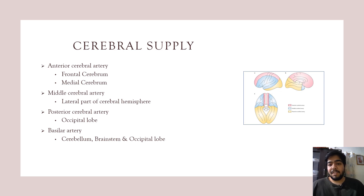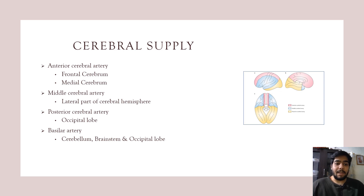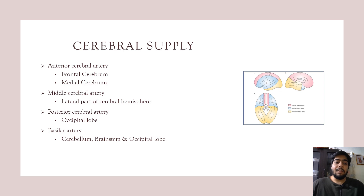This diagram shows which areas of the brain are supplied by which artery. The anterior cerebral artery supplies the frontal and medial cerebrum. The middle cerebral artery supplies the lateral part of the cerebral hemisphere. The posterior cerebral artery supplies the occipital lobe. The basilar artery supplies the cerebellum, brain stem, and occipital lobe, as shown in the diagram to your right.